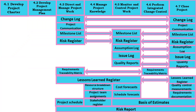Project Documents that can be considered as inputs for this process include the Change Log, which contains the status of all change requests, and the Lessons Learned Register. Lessons learned are used to improve project performance and to avoid repeating mistakes. The register helps identify where to set rules or guidelines so the team's actions are aligned.